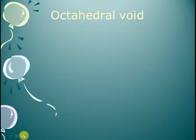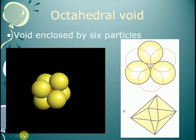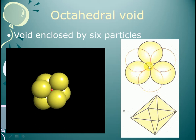Here we will see the octahedral void. This is basically six particles enclosing a void. We have seen close packing in two dimensions with coordination number six. When layers are stacked, an octahedral void forms because the arrangement has an octahedral shape.